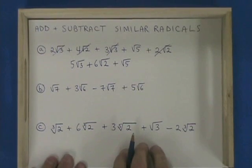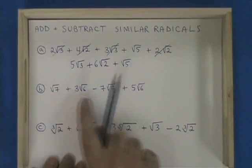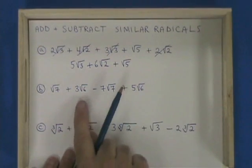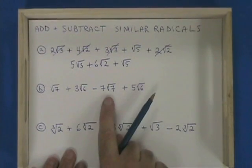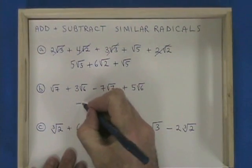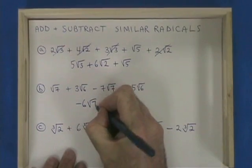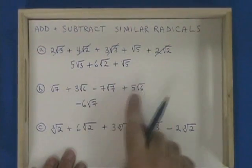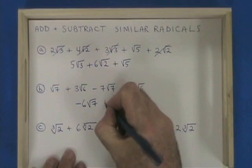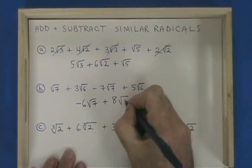In example B, there are two terms with √7 and two terms with √6. √7 minus 7√7 is negative 6√7. 3√6 plus 5√6 is 8√6.